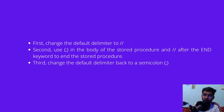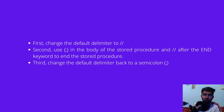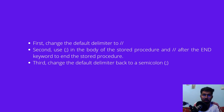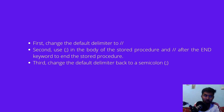Inside the body of the stored procedure you still use the semicolon to end individual statements. You declare the custom delimiter at the start, use semicolons inside the procedure body, and end the procedure with that custom delimiter. After you are done, you change the delimiter back to the semicolon by writing the keyword DELIMITER followed by a semicolon.